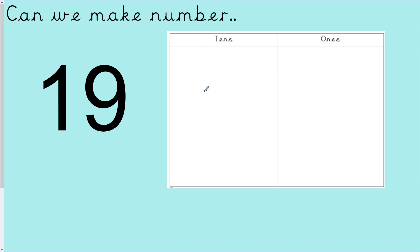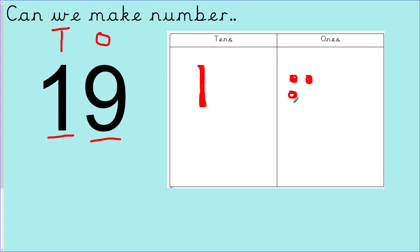Our number is 19. Please pause the video here and draw your tens and ones for the number 19 on your whiteboard. Okay, I hope you've all done that. Let's do it together. My number is 19. I've got my tens and I have my ones. How many groups of ten do I have? I have one group of ten — let me draw that here. Now look at the ones — how many ones do I have? 9 ones. I'm going to draw my 9 ones: one, two, three, four, five, six, seven, eight, nine. Well done.